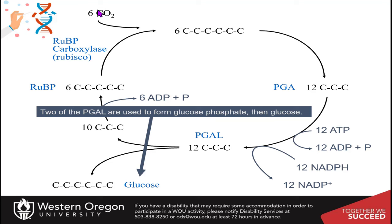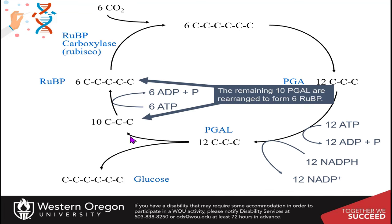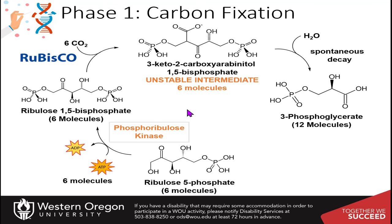All six carbon dioxides that came in are essentially accounted for in the one glucose molecule. The remaining 10 glyceraldehyde 3-phosphates are rearranged to form six ribulose 1,5-bisphosphate molecules, and this requires six ATP molecules as well. So you can see 18 ATP molecules and 12 NADPH molecules are needed to generate a single molecule of glucose.